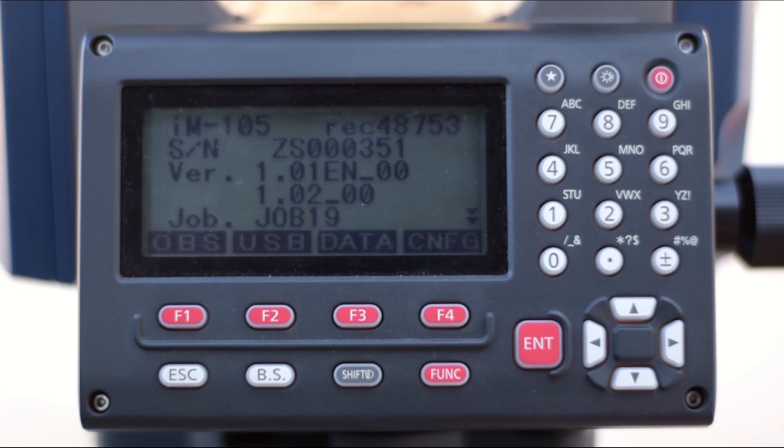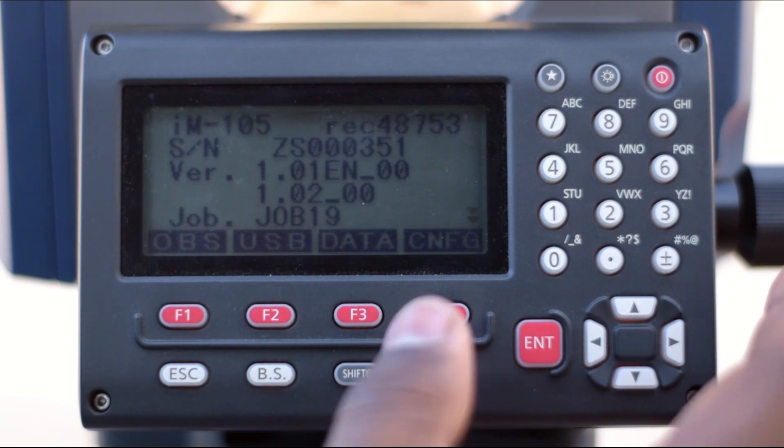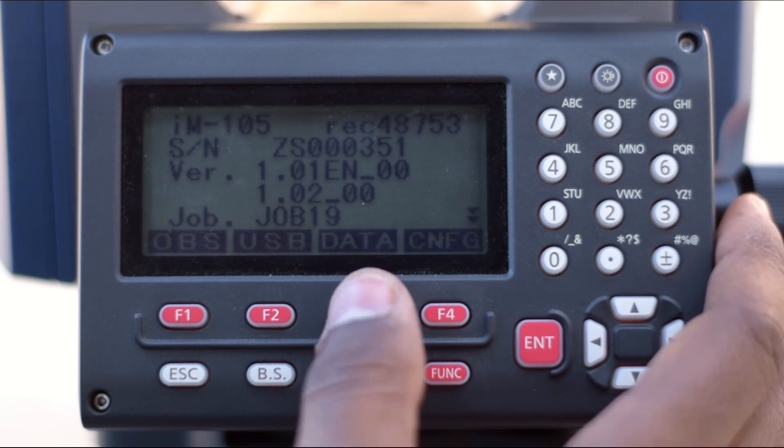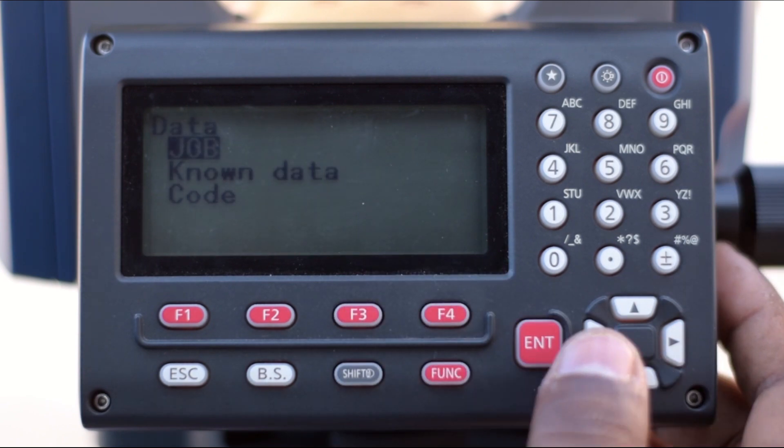Before starting new work, we need to create a new job in our total station. This is how our total station screen looks like. First, we'll go to the data option, which is F3, so we'll press F3 for data.